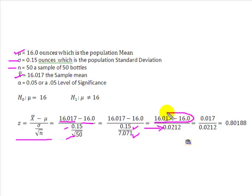I've taken the square root of 50, divided it into .15 to get me here. I took these two, subtracted them, got me here, moved this one over, divided this into this to give me a test value of what I'm going to round to just 0.80.